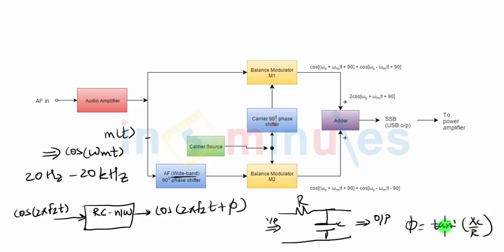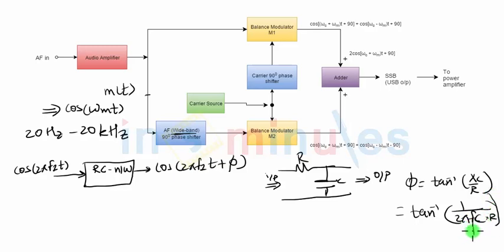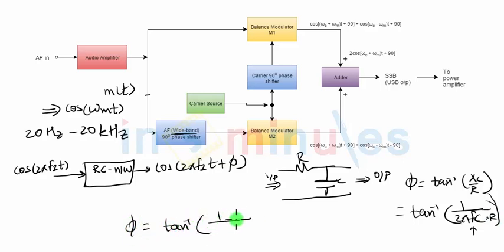We can obtain a phase difference of tan⁻¹(Xc/R), where Xc = 1/(2πfC·R), and f is the input frequency. So whatever the input frequency, it will be phase-shifted by φ, and you can see the phase shift depends on the input frequency and the values of the capacitor and resistor. Repeating: the phase shift is tan⁻¹(1/(2πfCR)).